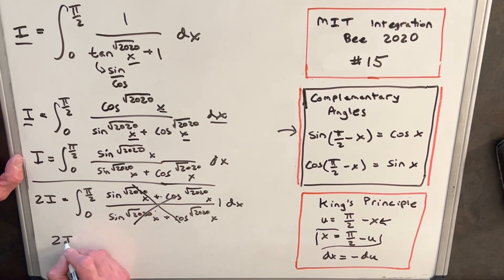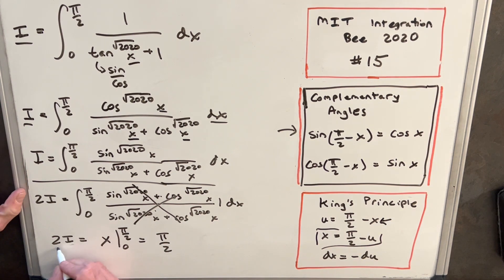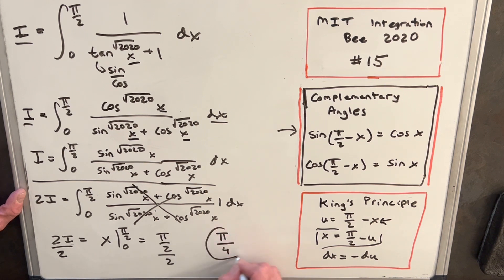So then we can just finish this off really quick. Integral of one is going to be x evaluated from pi over 2 to 0. It's just going to be pi over 2. Just have to remember this is two copies of the integral, so we're going to divide by 2 and then that's going to give us our final solution to this is going to be just pi over 4.